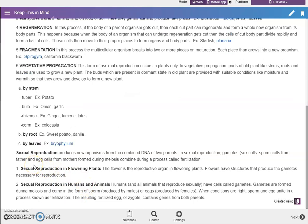And for sexual reproduction, we have sexual reproduction in flowering plants, then sexual reproduction in humans and animals.